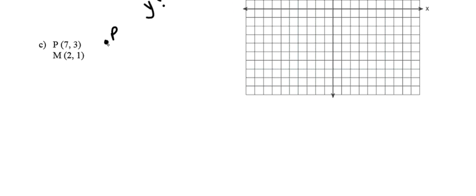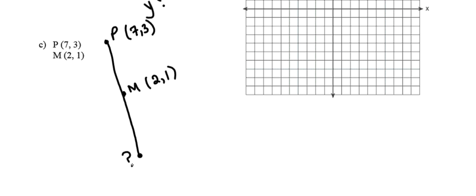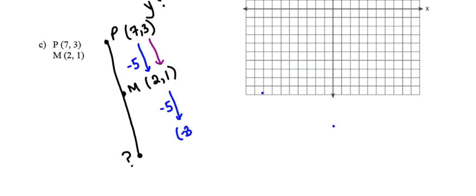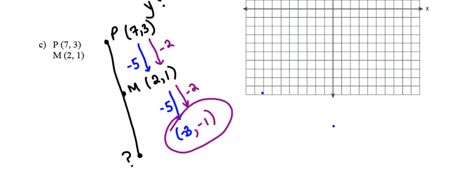I'm going to think about this last one exactly the same way. One endpoint is at P with coordinates (7, 3), the midpoint M has coordinates (2, 1), and I'm trying to find the other endpoint. Moving from 7 down to 2 is a change of minus 5, so to keep M in the middle we need another change of minus 5, landing at negative 3. On the y side, 3 down to 1 is a change of minus 2, and 1 minus 2 leaves us at negative 1. So the coordinates of the other endpoint are (negative 3, negative 1).